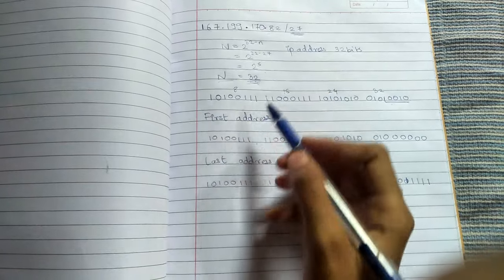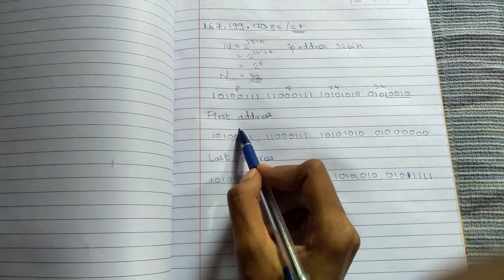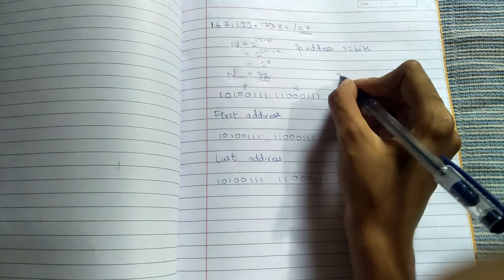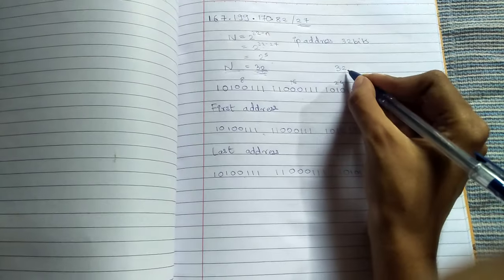The binary format of this IP address. Now to find the first address, all you have to do is, as you know, the IP address is of 32 bits. You will minus the prefix that is given, that is 32 minus 27.